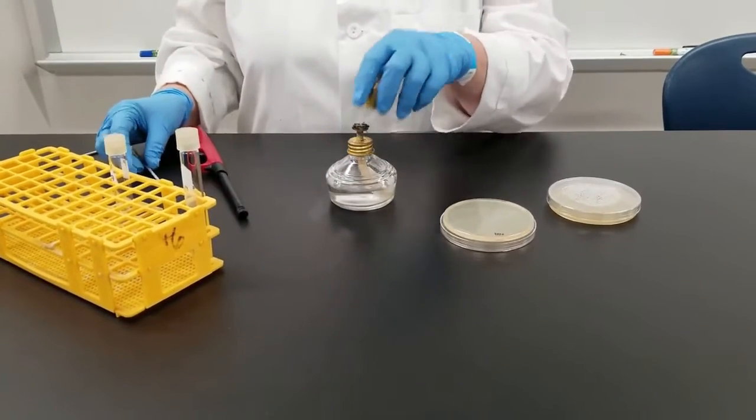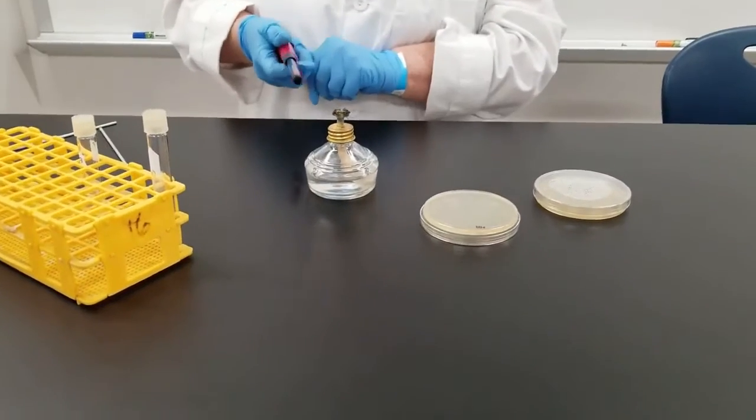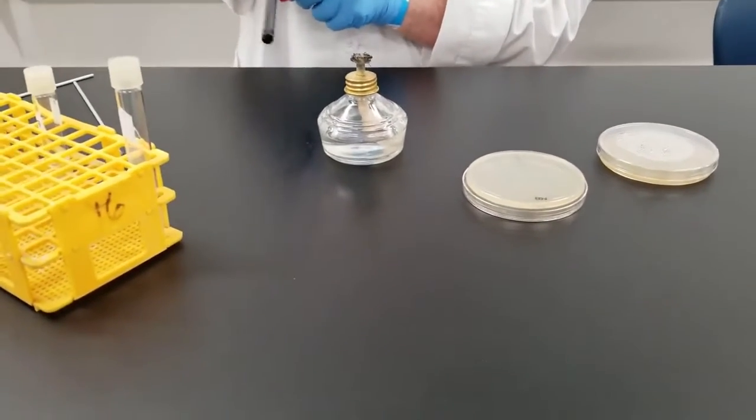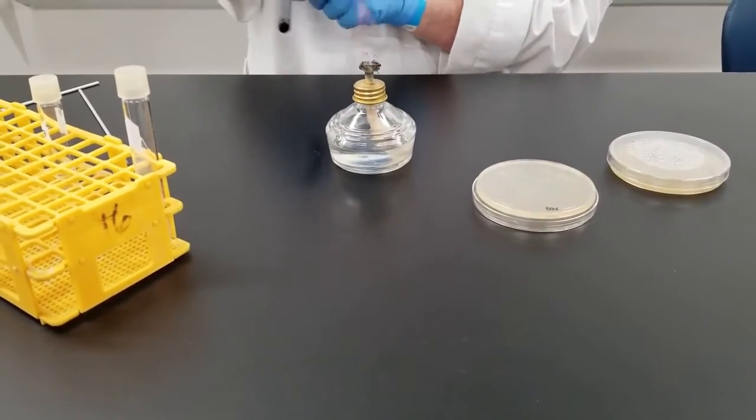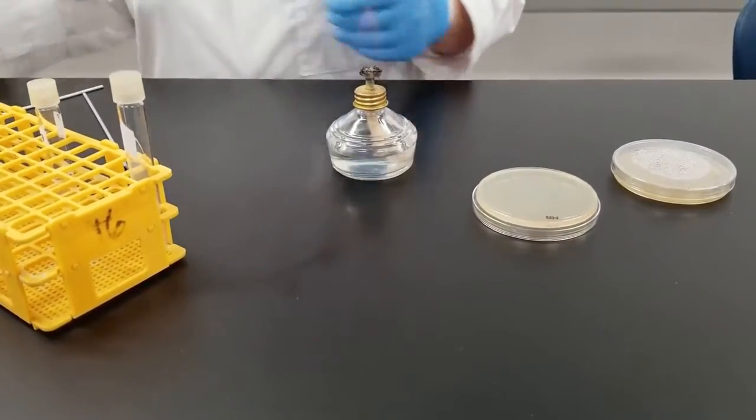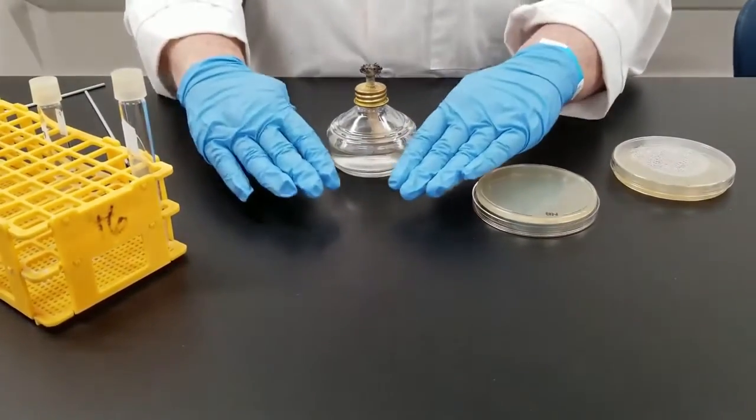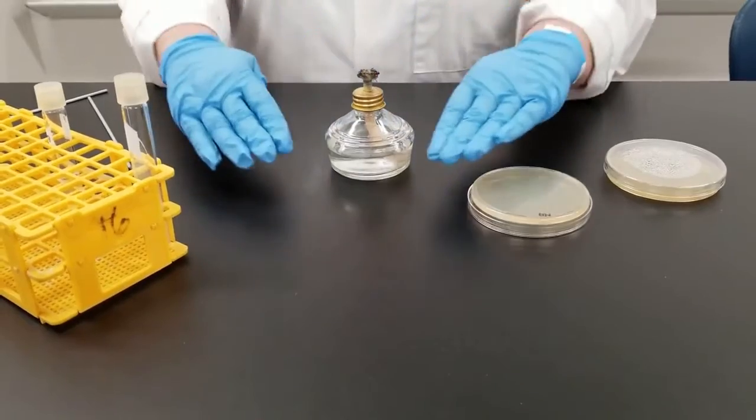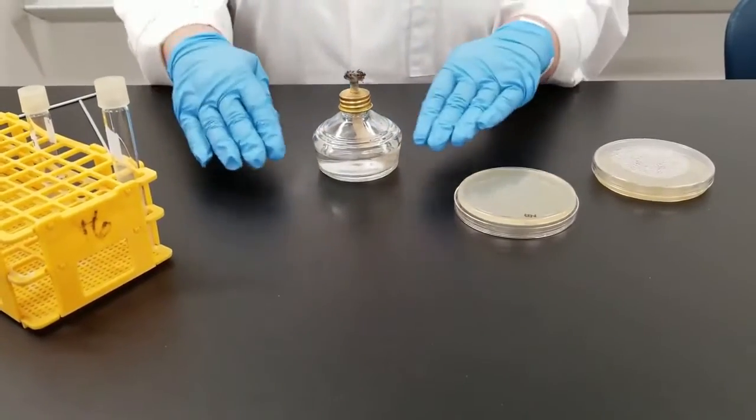Now we're always going to be working with the flame and working near that flame. General rule of thumb is that within about six, no more than eight inches around that flame is considered your sterile area.